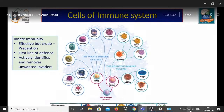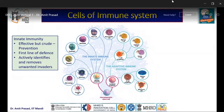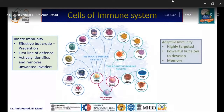The innate immune system is effective against invaders and acts as the first line of defense — fever and inflammation are part of innate immune protection. It rapidly identifies and removes invaders. The adaptive immunity is highly targeted: B cells produce antibodies specific to particular epitopes, they are powerful but slow to develop, usually taking weeks — but importantly, they have memory.